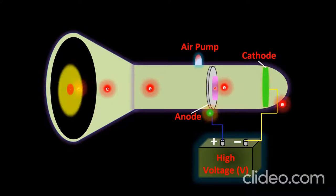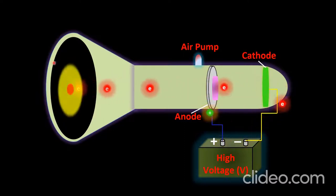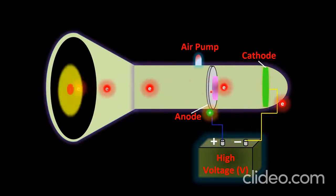The cathode ray tube consists of a cathode and a perforated anode, both connected with a high voltage source. The cathode is connected to the negative terminal of the battery and the anode to the positive terminal. At the end of the discharge tube there is a fluorescence screen. When high voltage is applied across the cathode, the cathode rays pass through the anode, proceed uniformly, and strike the fluorescence screen.